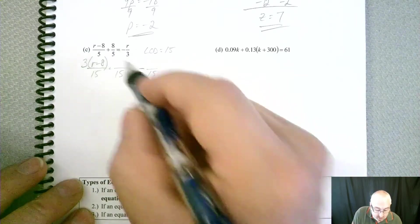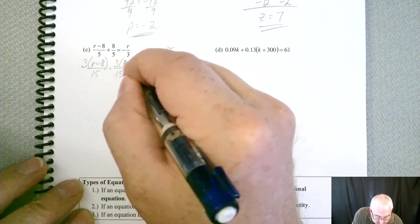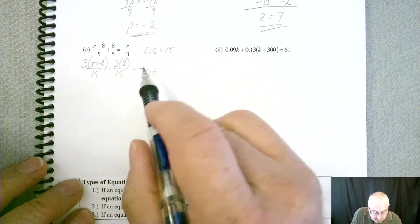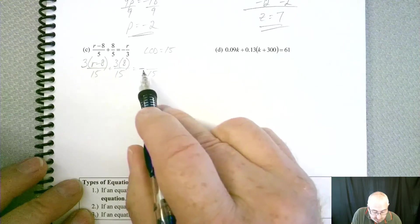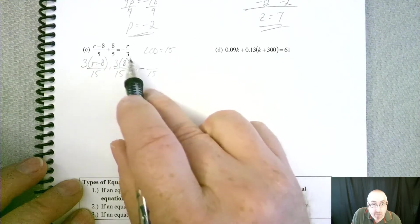Same idea here. I got the 3 times the 8. And over here, I already got the minus taken care of, but now we had to multiply it by 5.